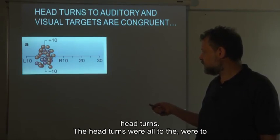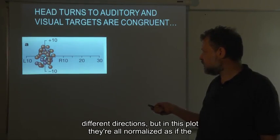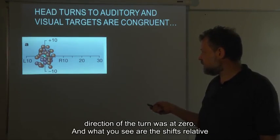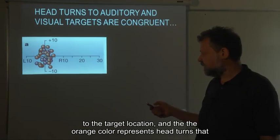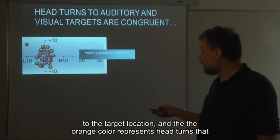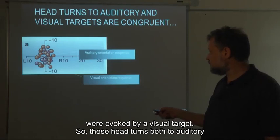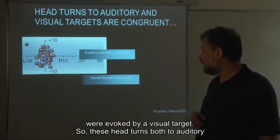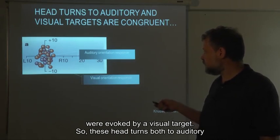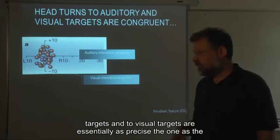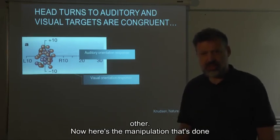The head turns were all to different directions, but in this plot they are all normalized as if the direction of the turn was at zero. What you see are the shifts relative to the target location. The orange color represents head turns evoked by an auditory target, and the purple circles represent head turns evoked by a visual target. These head turns, both to auditory and visual targets, are essentially as precise as one another.